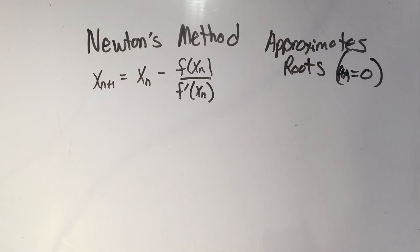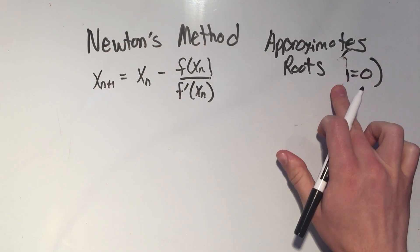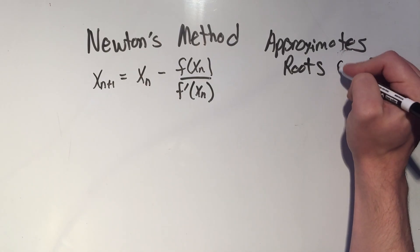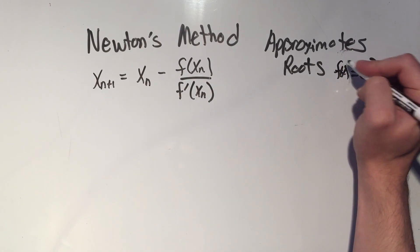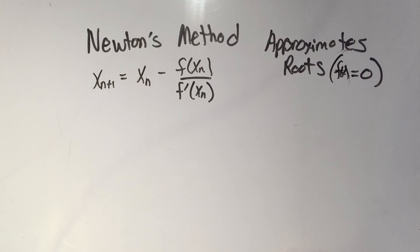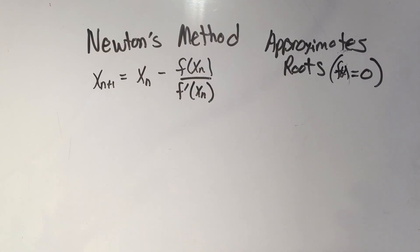That might not seem too useful, but if you've got a really hard equation to solve — like something like x to the fifth plus x to the fourth plus 5x cubed minus x plus one equals zero — how are you gonna solve that? You can't factor that. There's no quadratic formula for fifth-degree polynomials. This is how computers find answers to those things. This is Newton's method.